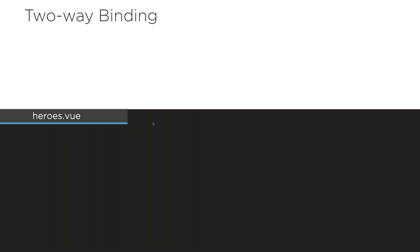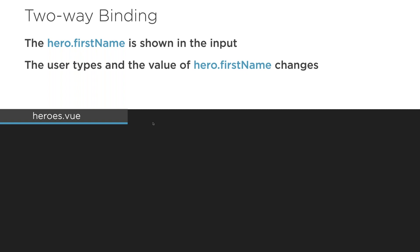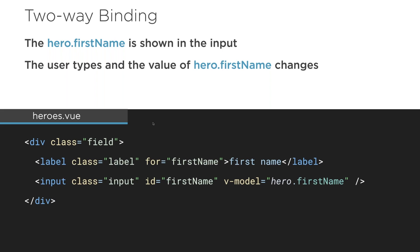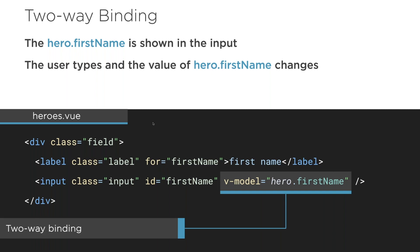For two-way binding, we use v-model. Say we have a hero object with a firstName property — as the user types 'Madeline' into an input, the value of hero.firstName automatically updates. The template just has a label displaying 'First Name' and an input with 'v-model="hero.firstName"'. That gives us two-way binding between the template and the component data.